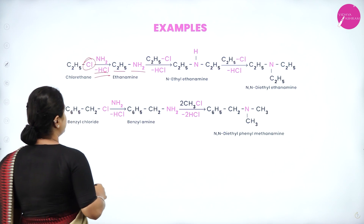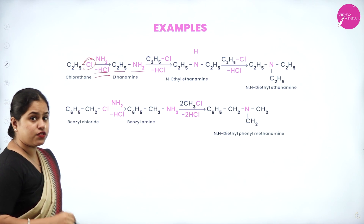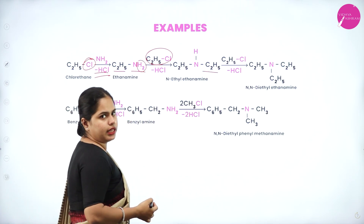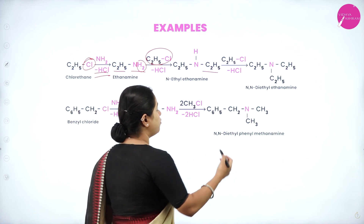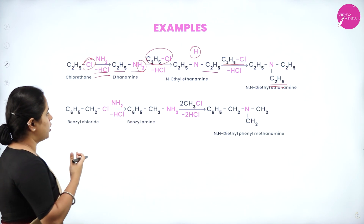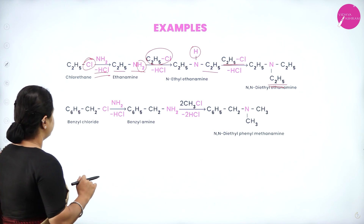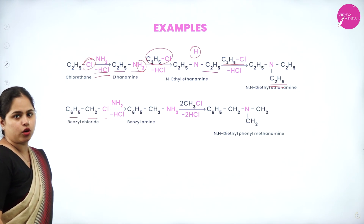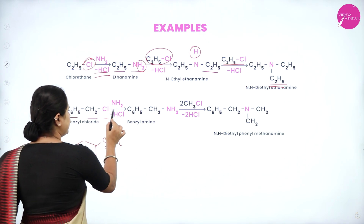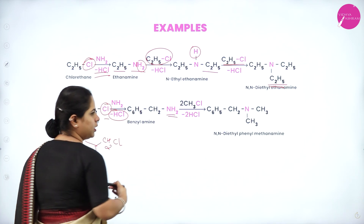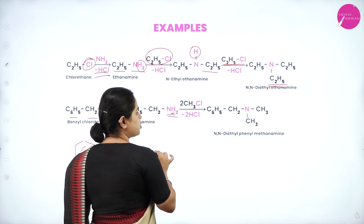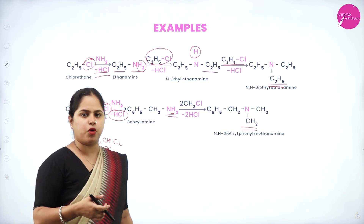For example, ethyl chloride (C₂H₅Cl) reacts with ammonia: HCl is removed and C₂H₅NH₂ (ethylamine) is obtained. Adding another molecule of C₂H₅Cl replaces another hydrogen to give a secondary amine, and adding one more gives a tertiary amine. Similarly, benzyl chloride (C₆H₅CH₂Cl) reacts with ammonia — HCl is removed and the amino group replaces the halogen. Adding methyl chloride (CH₃Cl) then replaces one hydrogen with a methyl group. This illustrates the ammonolysis process.